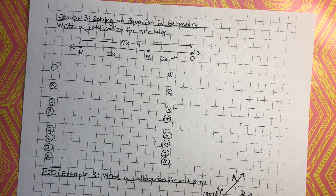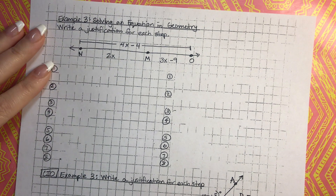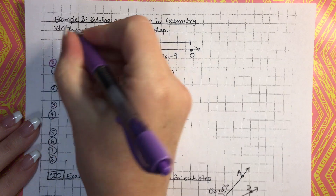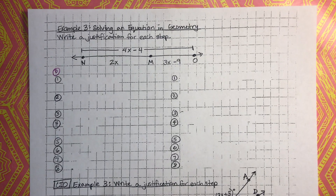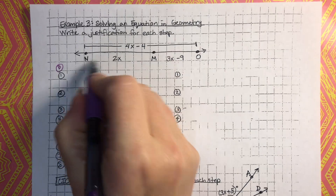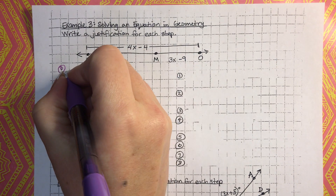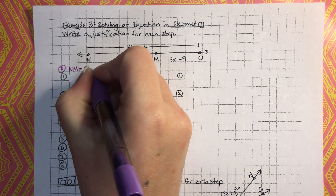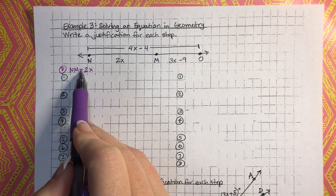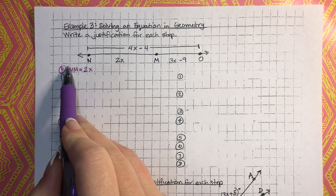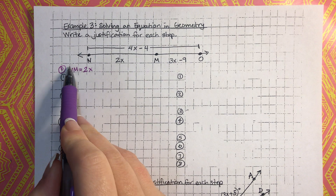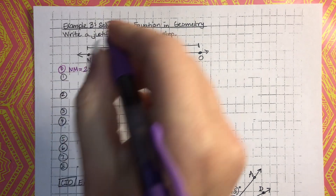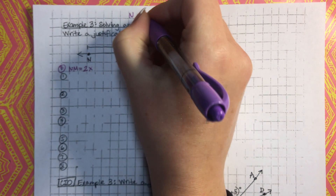Before we do that, we have to write down all of the given information. The first thing is NM is equal to 2x. Whenever you're using the equal sign, you don't put a line over the top. The line over the top for the line segment is only when you're using the congruent symbol.